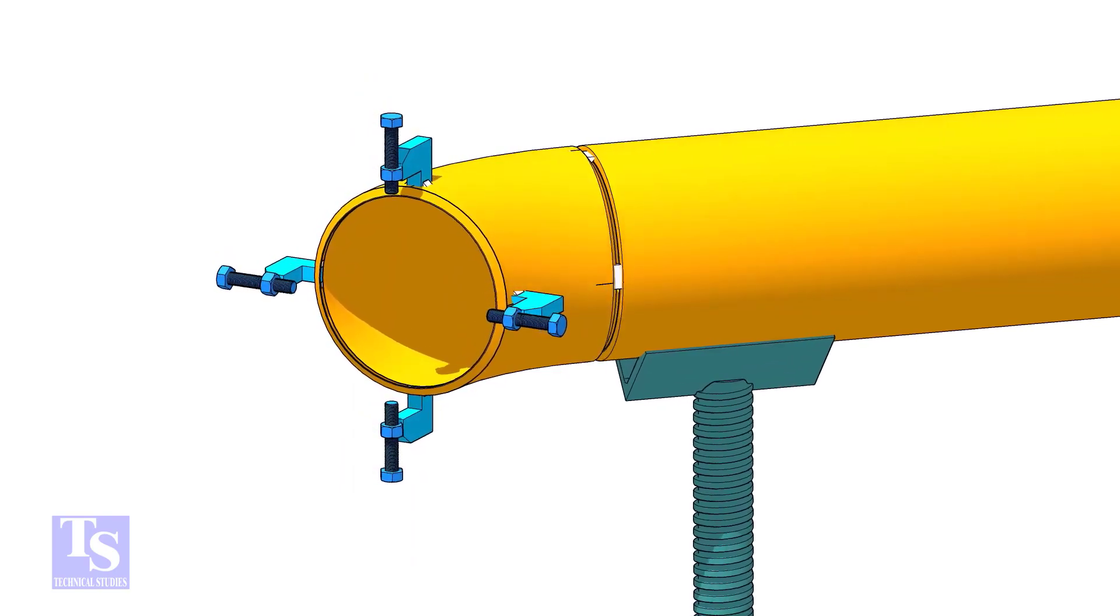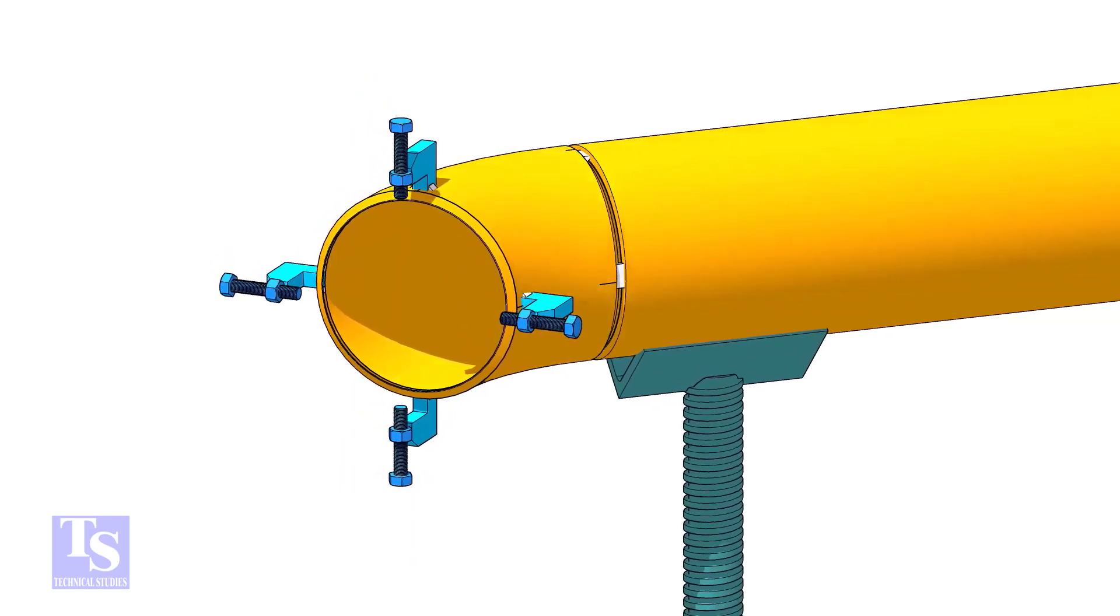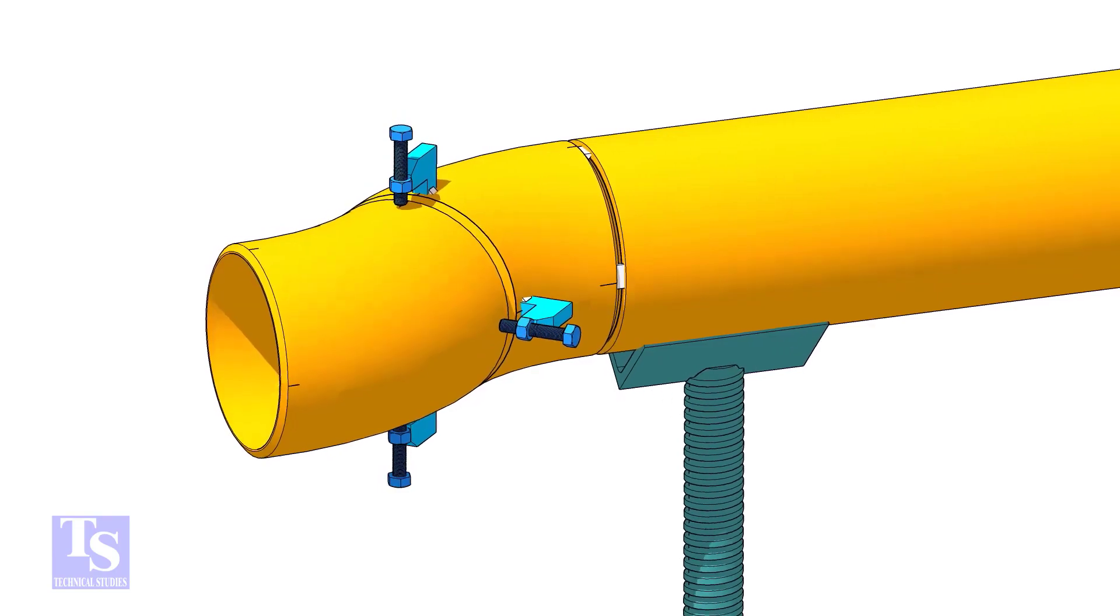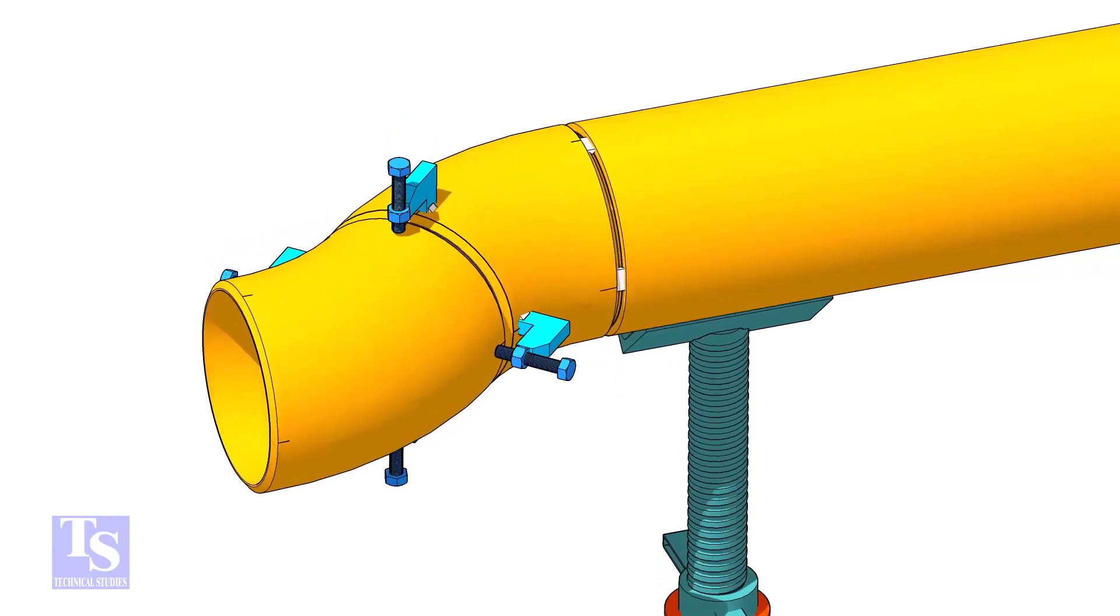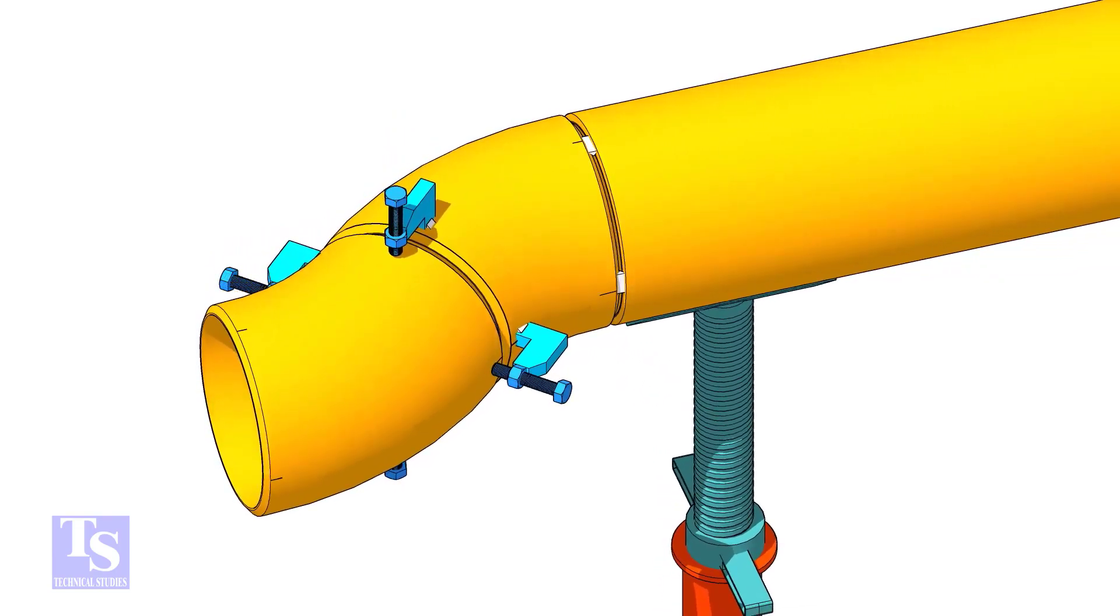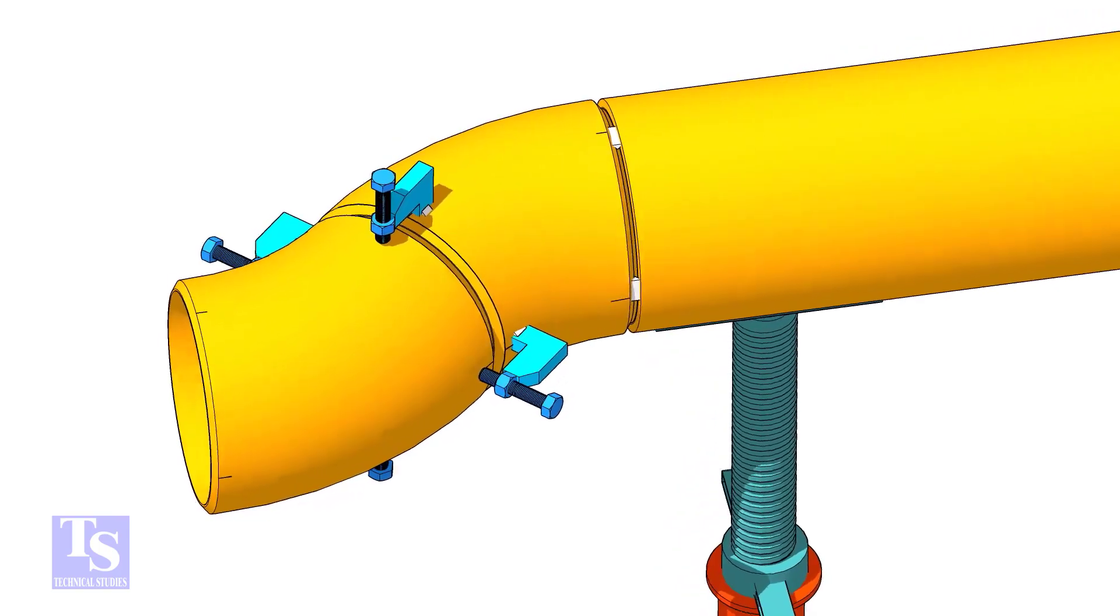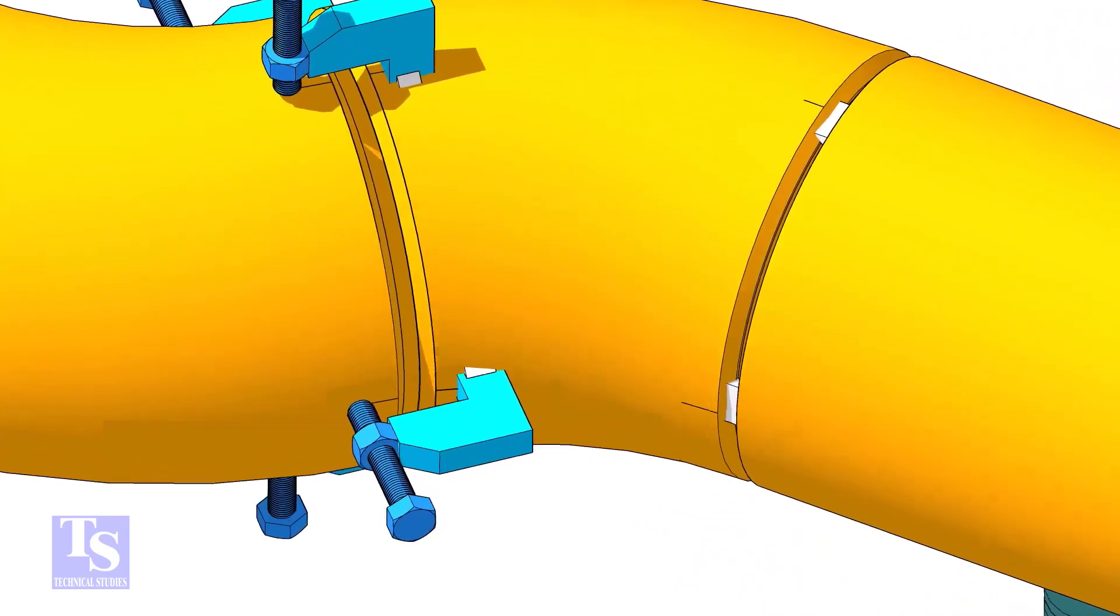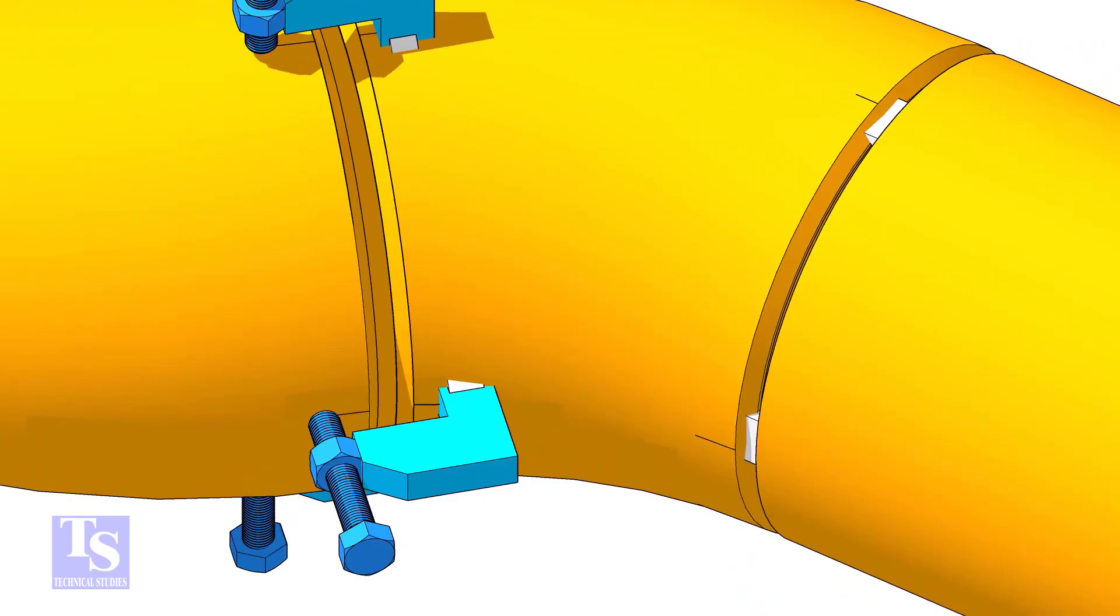Tack weld four jack bolts as shown. Put the other elbow in the jack bolts and match the center lines of both elbows. Put the gap rod between the elbows and maintain the required gap.